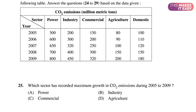The second question asks: which sector has recorded maximum growth in CO2 emission during 2005 to 2009? The options are power, industry, and agriculture — there is no domestic, so we don't need to calculate the percentage increase for domestic. We already calculated power: there is a 60% growth. For industry, it was 200 and now it is 450, which is almost a 125% increase. Once 200 comes to 400 it would be 100% increase, but it came to 450, so it is more than 100% — approximately 125%.